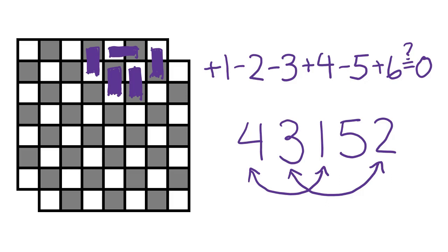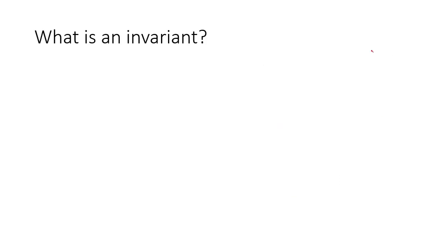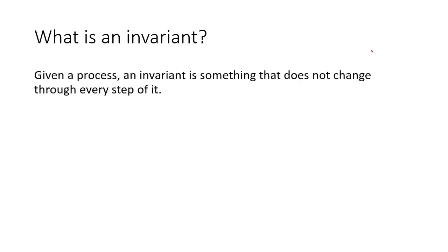So what is an invariant? Given a process, an invariant is something that does not change through every step of it. It's easiest to explain what that actually means with an example.